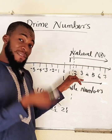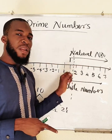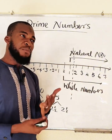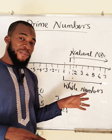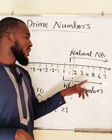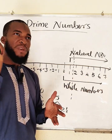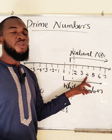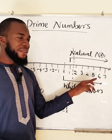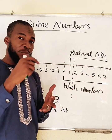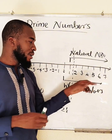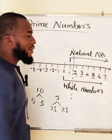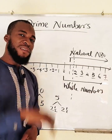Two cannot be divided by any other number exactly except one and two, therefore two is a prime number. Three can be divided by one and by three — no other number can divide it exactly without remainder. Four can be divided by one, two, and four — three numbers without remainder — so four is not a prime number. Five can be divided by one and five only, so five is a prime number. So two, three, and five are prime. Moving on, you have 11, 13, 17, and 19.